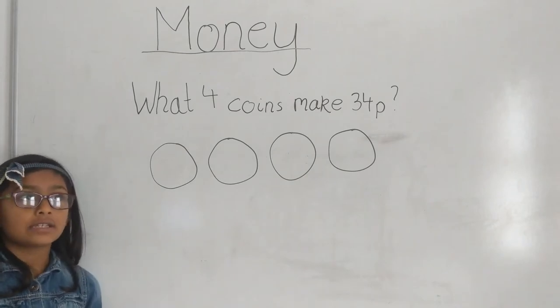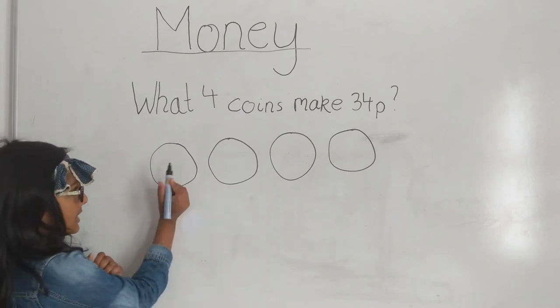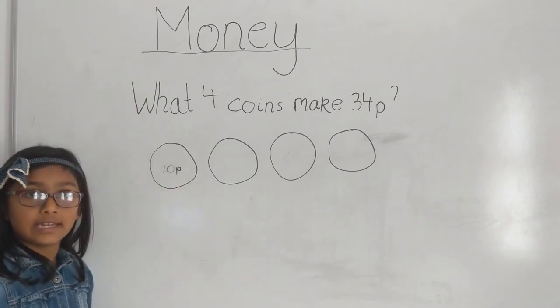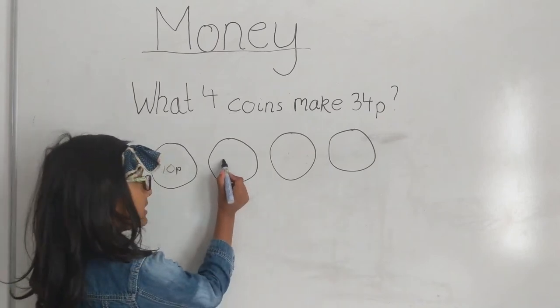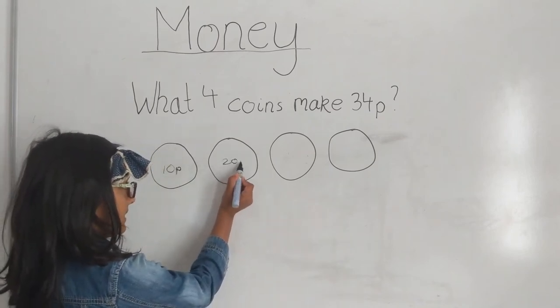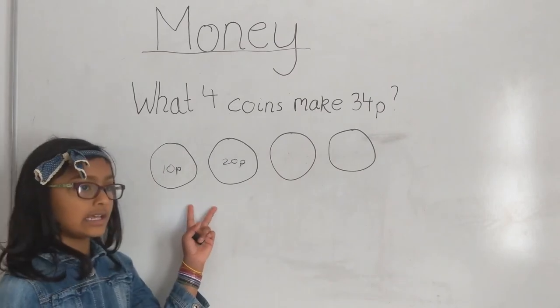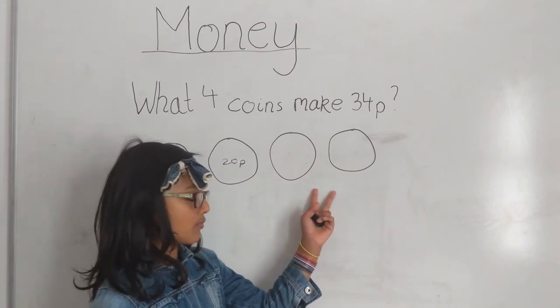So 1 times 10 equals 10. So 10p is one of the numbers. And 2 times 10 equals 20. So 20p is the second coin. So we've done 2 coins. Now we have to do 2 more coins.